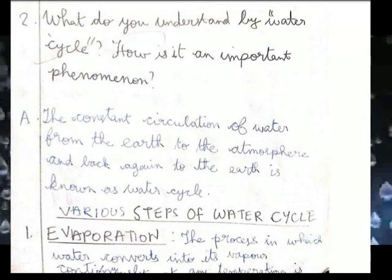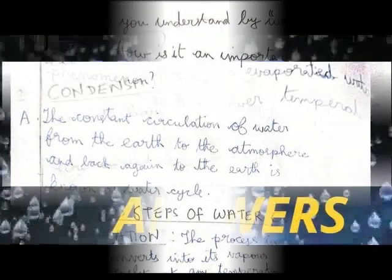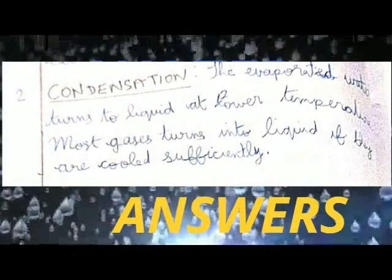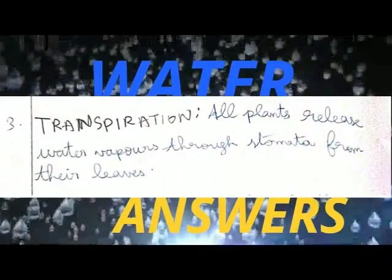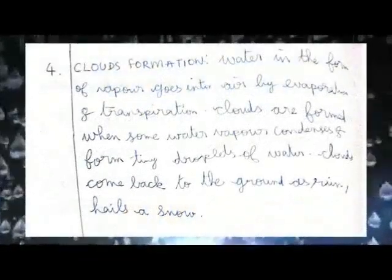Steps of the water cycle: Evaporation - the process in which water converts into its vapour continuously at any temperature is called evaporation. Condensation - the evaporated water turns to liquid at lower temperature; most gases turn to liquid if they are cooled sufficiently. Transpiration - all plants release water vapour through stomata from their leaves. Water in the form of vapour goes into the air by evaporation and transpiration. Clouds are formed when some water vapour condenses and forms tiny droplets of water. Clouds come back to the ground as rain, hail, or snow.